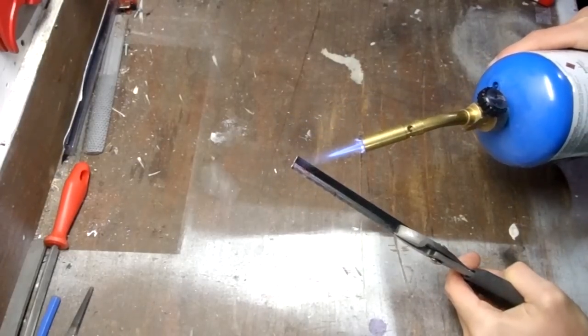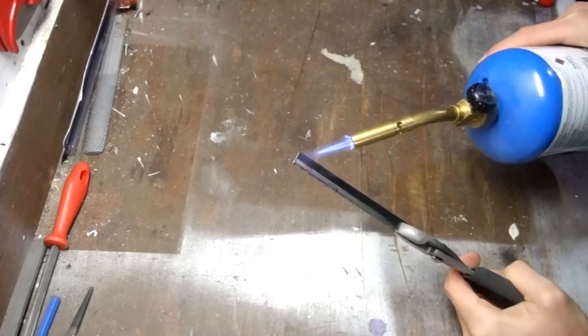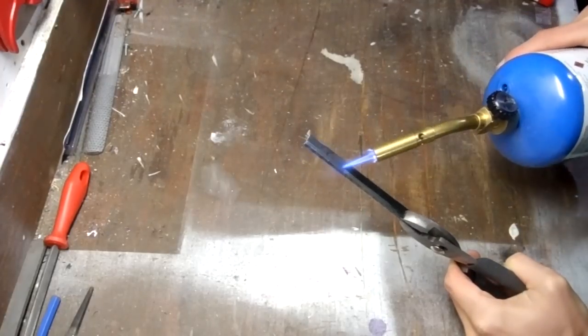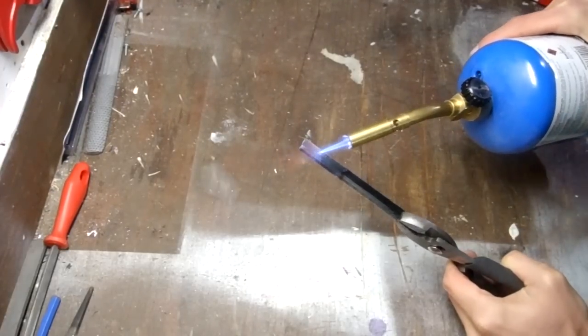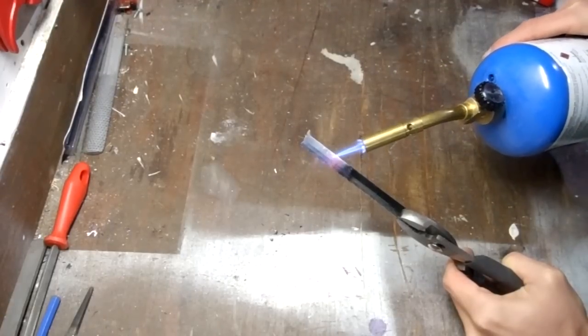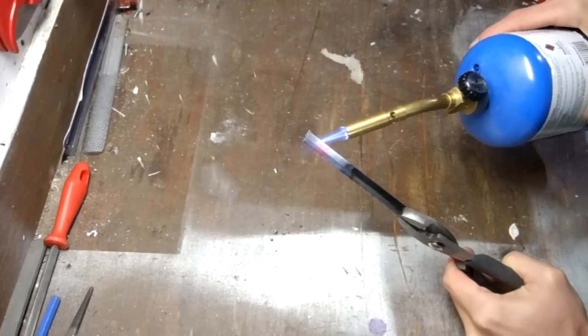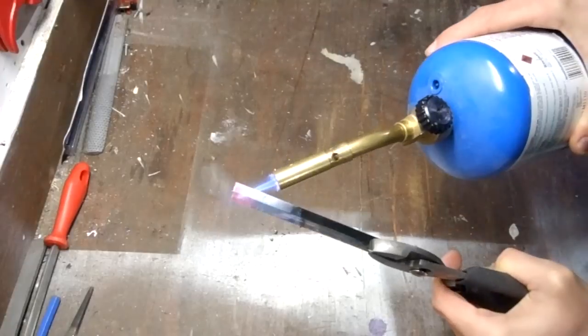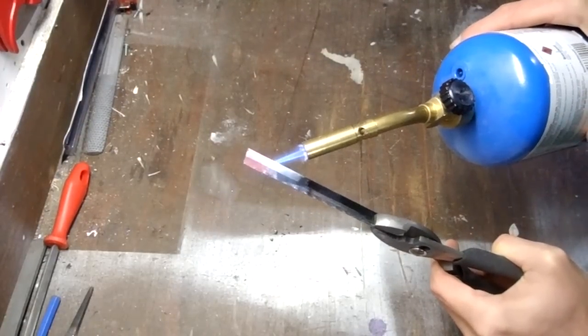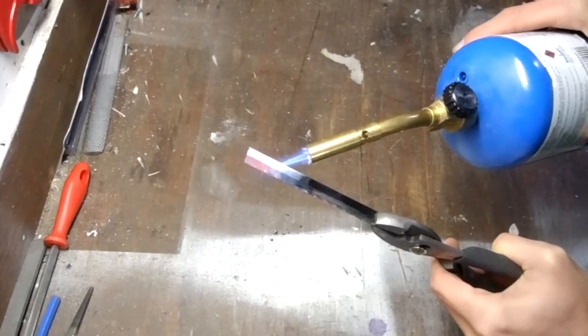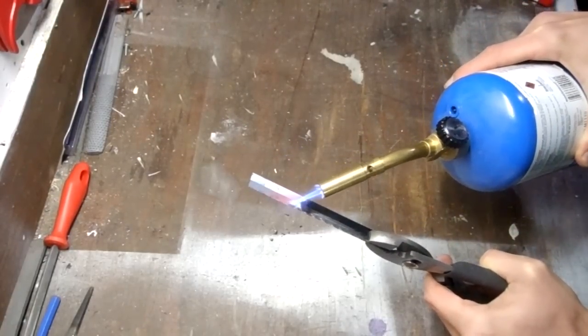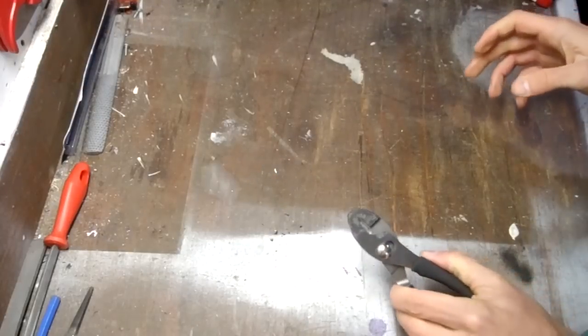So use the propane torch and heat up the end until it's red hot. In this case it doesn't have to be all red at the same time. Just make sure that every part of the end gets red at some point. Then set it down and let it cool on its own.